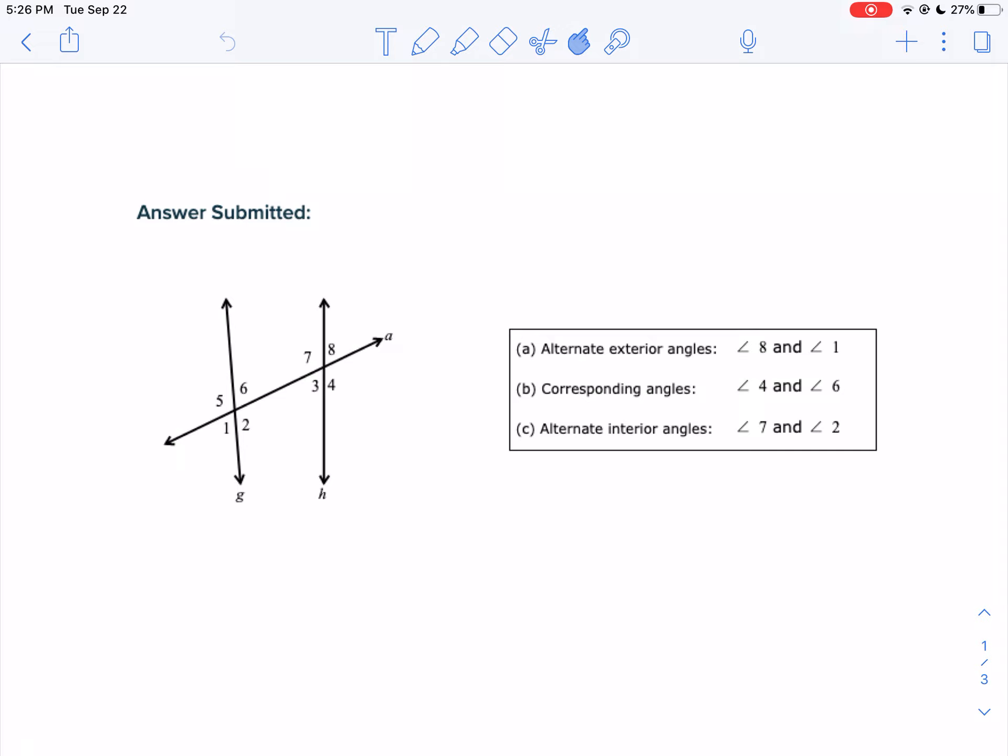Let's take a look at what's right, because you did most of it right, and what's incorrect. Starting with letter A, you said alternate exterior angles are angle 8 and angle 1. Perfect. That one is correct. Okay, put a C here for correct.